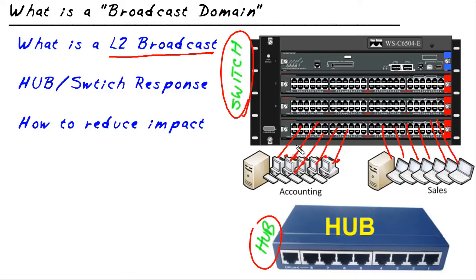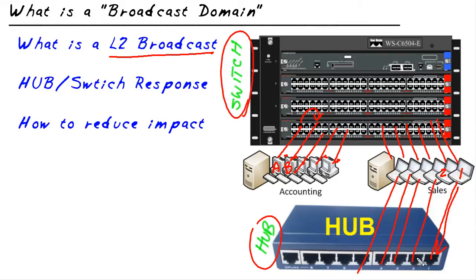Simply put, if computer A needs to talk to computer B, the switch is going to forward the frames from one to the other and not bother everybody else — very smart. A hub, on the other hand, if salespeople are connected to a hub and salesperson 1 wants to talk to salesperson 2, the hub would send the frame out to every other port, everybody who's connected. So for traffic from one device to another, the switch is very smart and the hub is very unsmart in how they make forwarding decisions.